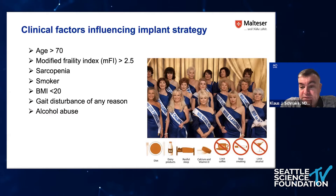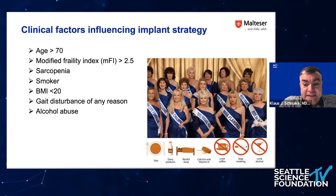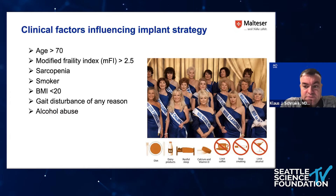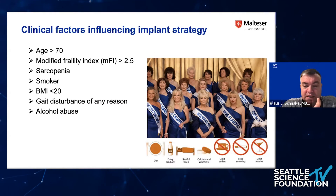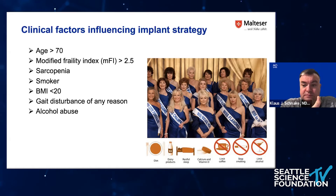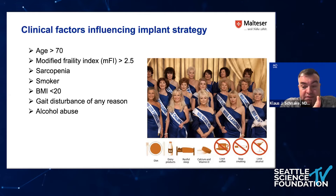High age, more comorbidities, higher frailty, sarcopenia — all of these are risk factors for screw loosening and worse clinical outcome. Smokers, very thin patients, gait disturbances of any cause, and alcohol abuse are additional risk factors. Assessing the patient closely helps identify who has a high risk of failure with conservative treatment, and guides surgical decision-making — whether to use main screws, long constructs, and so on.